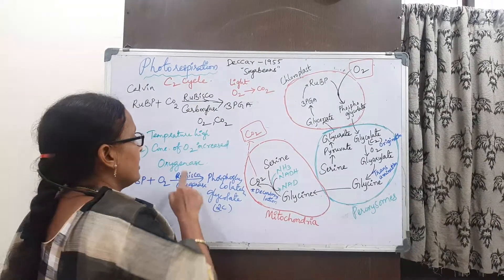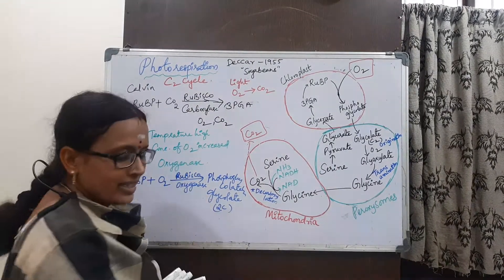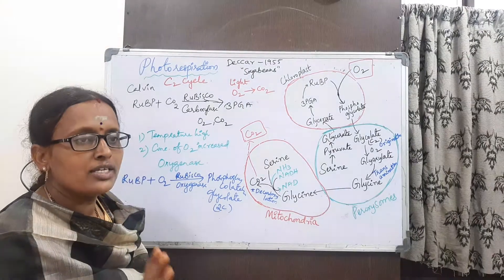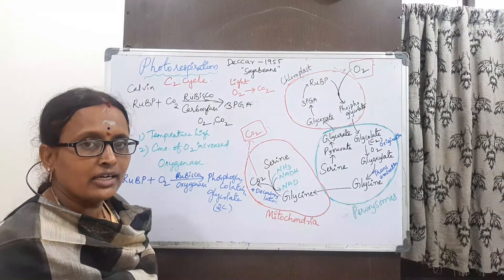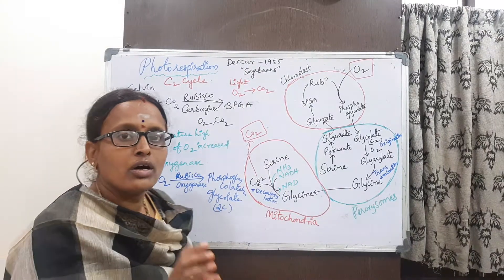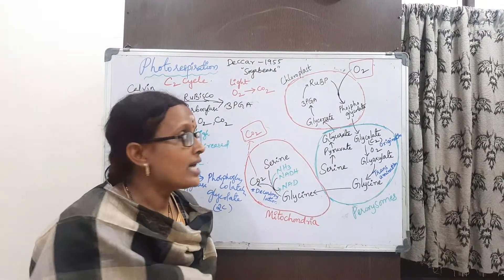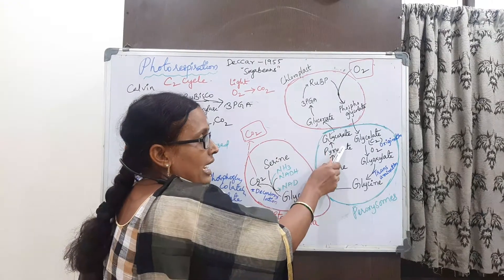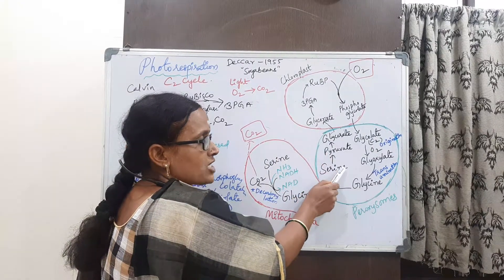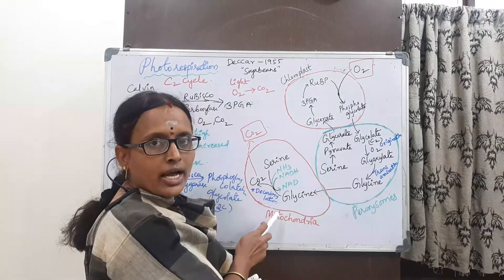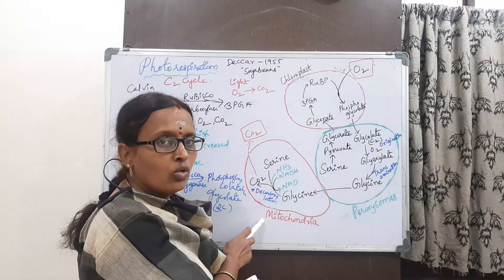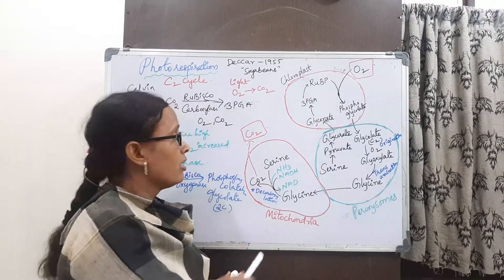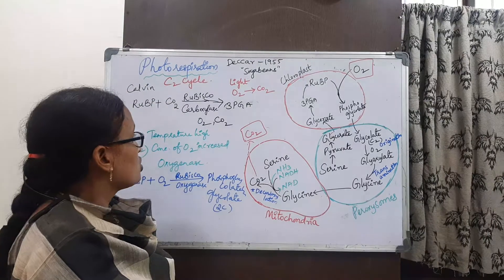In this C2 cycle, three cell organelles are involved: chloroplasts, peroxisomes, and mitochondria.